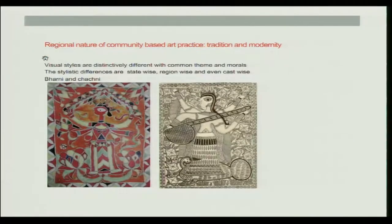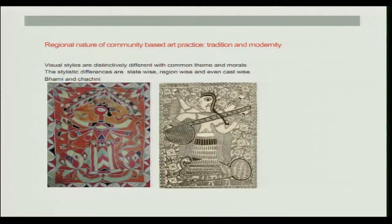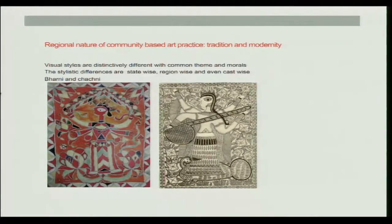The regional nature of community-based art practice shows visual styles that are distinctively different with common themes and morals. The stylistic differences are state-wise, region-wise, and even caste-wise. The Bharni and the Kachni are two traditions: in the Bharni technique there is colour filling, and in the Kachni technique these are only line drawings with no colour filling.